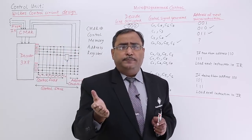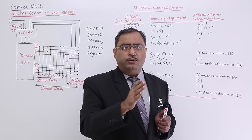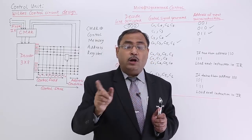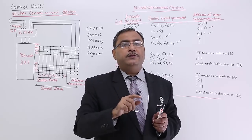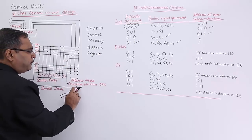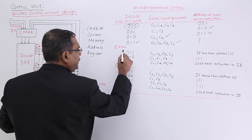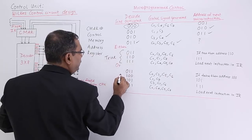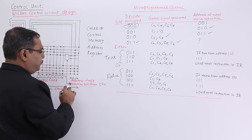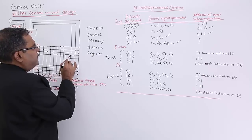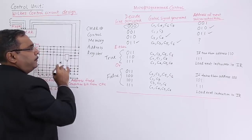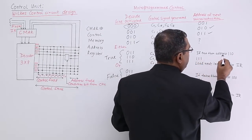When the condition bit from the CPU is true, one return address is used, and when the condition bit is false, a different return address is used. When the condition bit is true, the return address is 1 1 0. So 1 1 0 will be coming down and the respective control signals for that line will get generated.